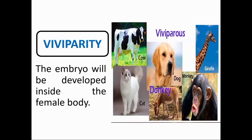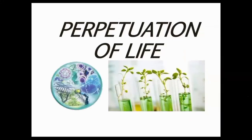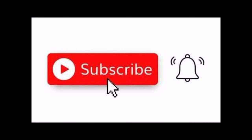Examples of viviparous animals include cow, giraffe, cat, donkey, dog, monkey, and many more. To ensure species continuity, nature allows for both sexual and asexual reproduction in the animal kingdom. The success of animal reproduction does not only end when an egg is fertilized — it ends when the offspring can fully grow and eventually reproduce as well. Reproduction is a key to survival. We will all eventually die, and we need to make sure that our species continue through reproduction.